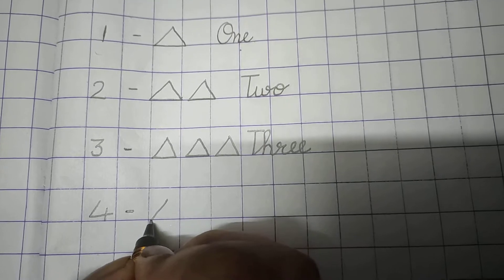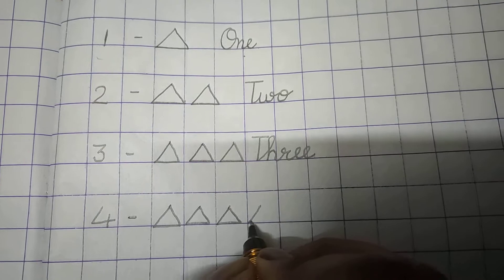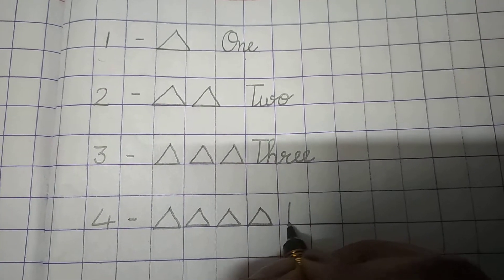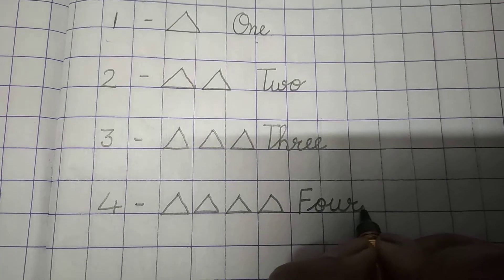4. 4 triangles. 1, 2, 3, 4. Write down 4: F-O-U-R, 4.